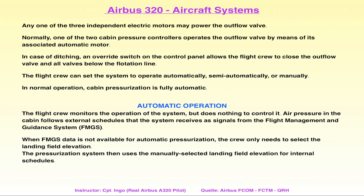Welche Informationen benötigt der Cabin Pressure Controller? Die beiden CPCs sind über ein Crosslink-Kabel miteinander verbunden – eine Synchronisierung. Informationen, die synchronisiert werden, kommen unter anderem vom Flight Management and Guidance System: die Landing Elevation und andere Daten. Eine weitere Information ist die manuelle Selektion der Landing Elevation.